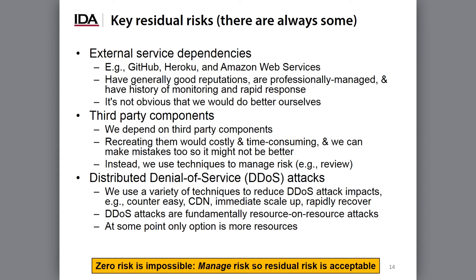Here are our key residual risks. There are always residual risks — it is not possible to have zero risk. The idea is to manage your risks, identify residual risks, and make sure those residual risks are acceptable to your stakeholders. First of all, we depend on external services, in particular services such as GitHub, Heroku, and Amazon Web Services. In practice, you really can't avoid depending on some external services. But these have good reputations, they're professionally managed, they have a history of monitoring and response, and frankly it's not clear we would do better ourselves — it certainly would cost a lot more.